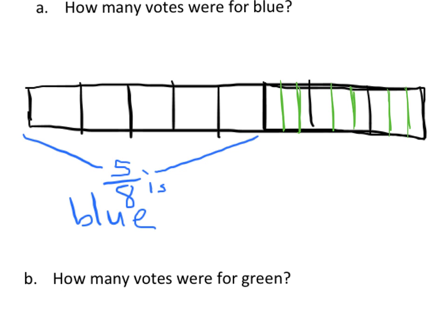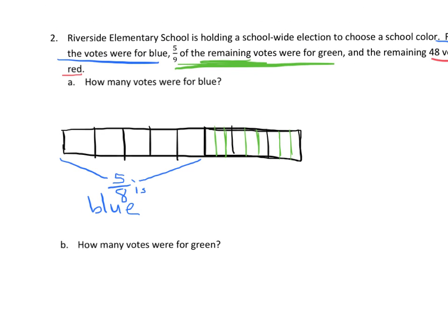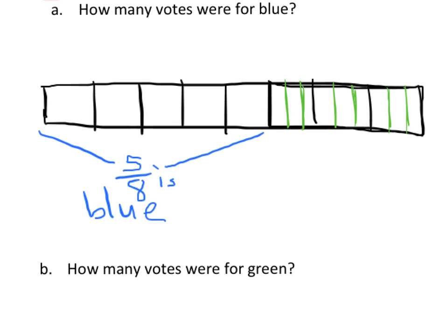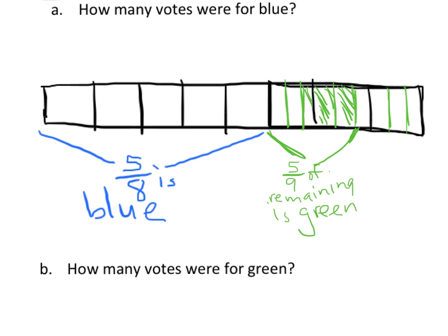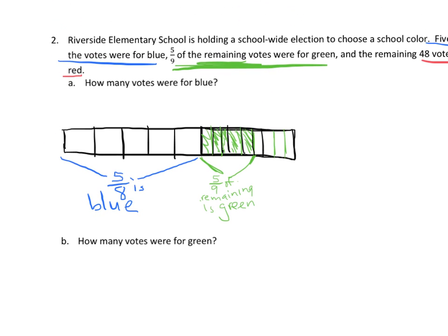Using green, I cut the remaining section into nine little pieces — boom, boom, boom, boom, boom, boom, boom, boom — there are my nine little units. Five-ninths of the remaining votes were for green, so that's one, two, three, four, five — from here to here, five-ninths of remaining is green. I'm going to shade in those five pieces to represent the green votes.